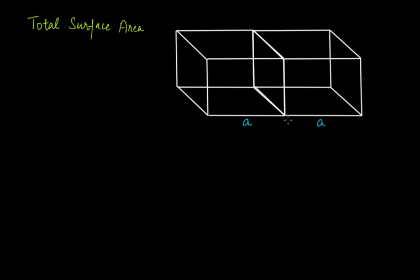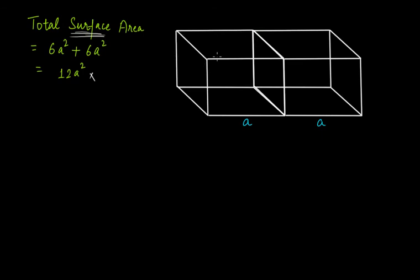Some might say the total surface area of one cube is 6a² and the other is also 6a², so together it's 12a². But that answer is wrong. You have to pay attention to the word 'surface.' The right side face of the first cube and the left side face of the second cube are joined together, so they are no longer part of the surface of this solid shape.